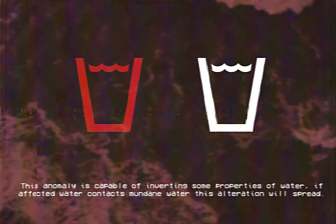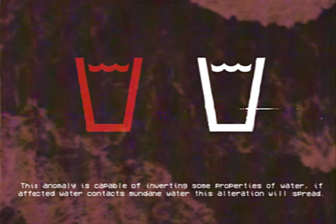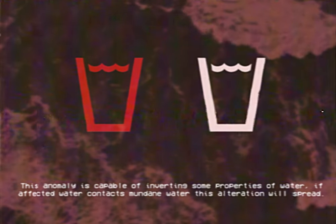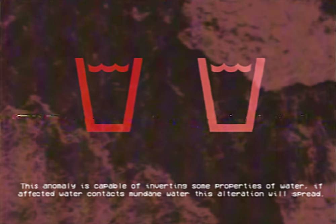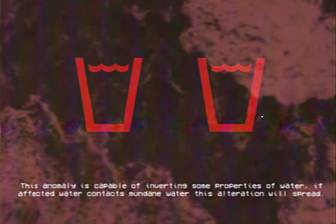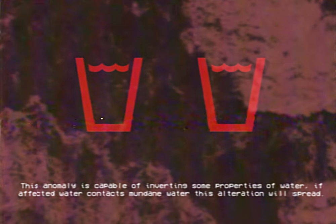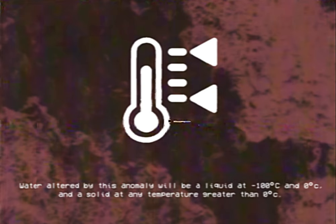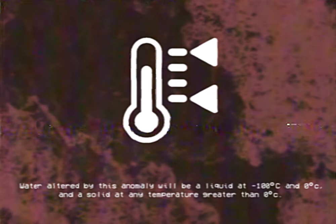This anomaly is capable of inverting some properties of water. If affected water contacts mundane water, this alteration will spread. Water altered by this anomaly will be a liquid at minus 100 degrees C and 0 degrees C, and a solid at any temperature greater than 0 degrees C.